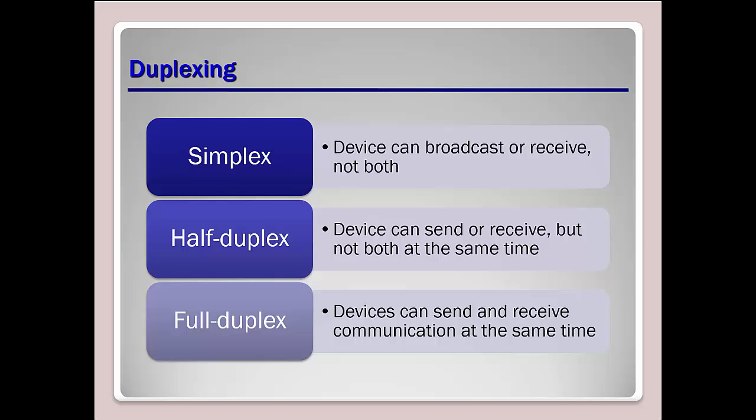Duplexing refers to how signal goes back and forth over the cable. Simplex: device can broadcast or receive but not both. Half duplex: can send or receive but not both at the same time — like token ring, where the signal had to go all the way around the ring back to the sending device before another signal could be sent. Full duplex: can send and receive at the same time, which is possible because of the wire capability.